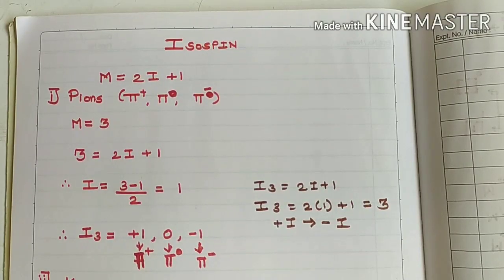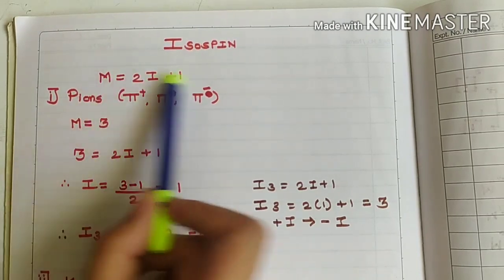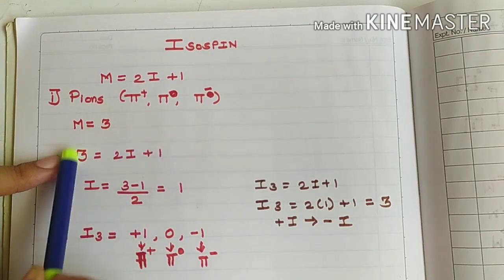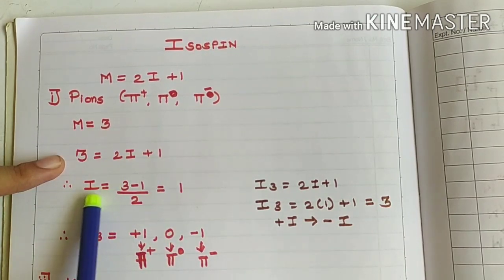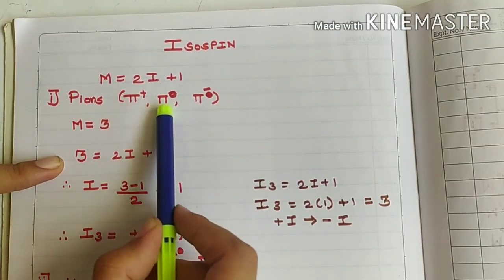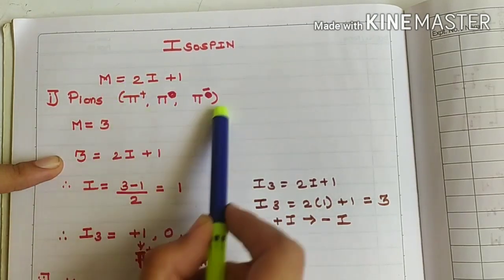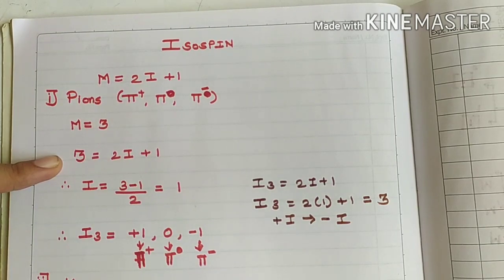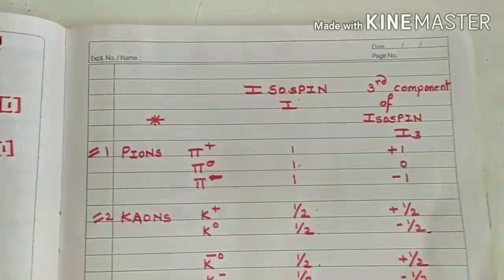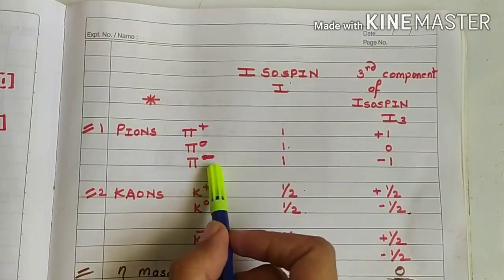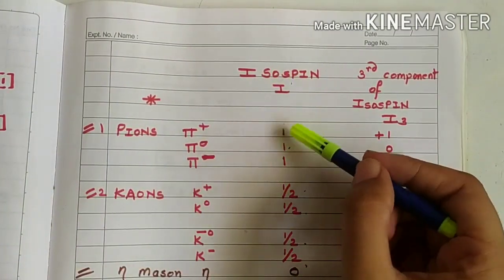If we put m equal to 3 in the equation for isospin, we get 3 = 2i + 1. Writing this in terms of i, we get i = (3 − 1) / 2 = 1. This means that pi plus, pi naught, and pi minus — all 3 of them have an isospin value of 1. So we can feed this value of i into the chart. For pi plus, pi naught, and pi minus, the isospin is 1, 1, and 1 respectively.